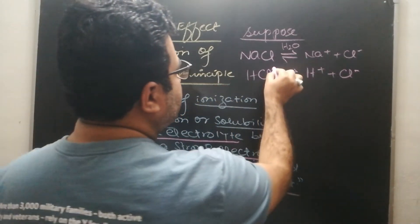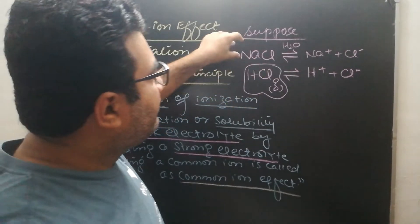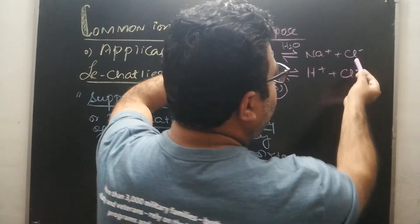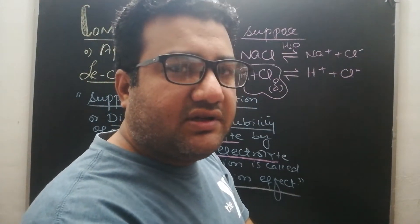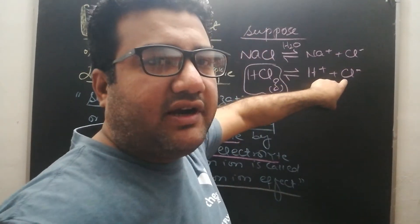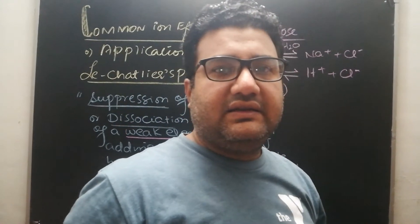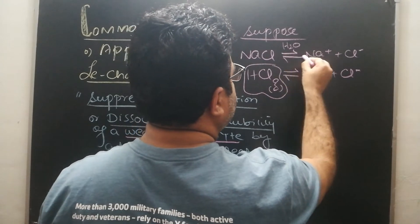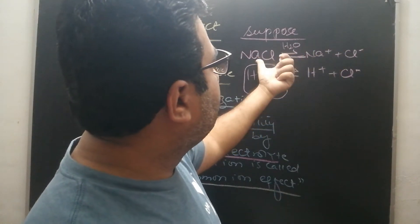HCl is a strong electrolyte. Due to the addition of this strong electrolyte, the ionization or dissociation of NaCl is suppressed. Why? Because chloride ions were already present in the solution and you have added more chloride ions. According to Le Chatelier's principle, when something is added to the products side, the reaction moves in the backward direction — so ionization of NaCl will be suppressed.